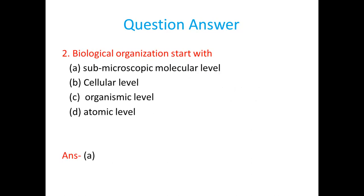Biological organization starts with submicroscopic molecular level, cellular level, organismic level, or atomic level. So atomic level is a very low level but atomic level is not confined, it is not defined in the case of biology. Submicroscopic molecular level is defined. It is the smallest one.